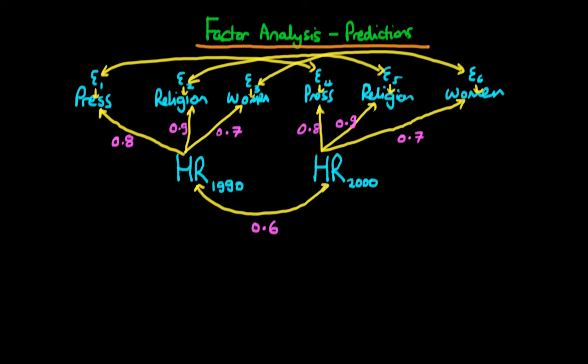So the idea here is that we have, for one particular country, measures of freedom of press, religious rights, and rights of women at two different points in time. We have them measured in the year 1990, which is these three variables on the left, and we have the same set of variables measured over here on the right-hand side for the year 2000.